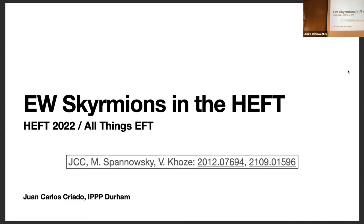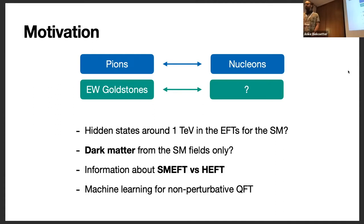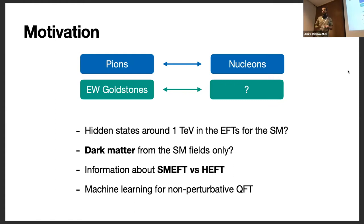My talk today is about some work I've been doing with Michael, Valia, Jose, and the HVP. It's about electroweak experiments, and I'll start with some motivation based on an analogy between low-energy QCD and the scalar sector of the electroweak theory. It's a simple analogy: you have a set of three Goldstone bosons that parameterize an SU(2) matrix in both theories. They are obviously very different theories in other aspects, but we might ask how much further we can take this analogy.